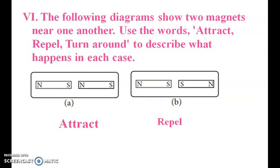The following diagram shows magnets near one another. Use the words attract, repel, or turn around. First, diagram A: one end is south, another is north — opposite poles, so they attract each other. Diagram B: same poles, so they repel each other.